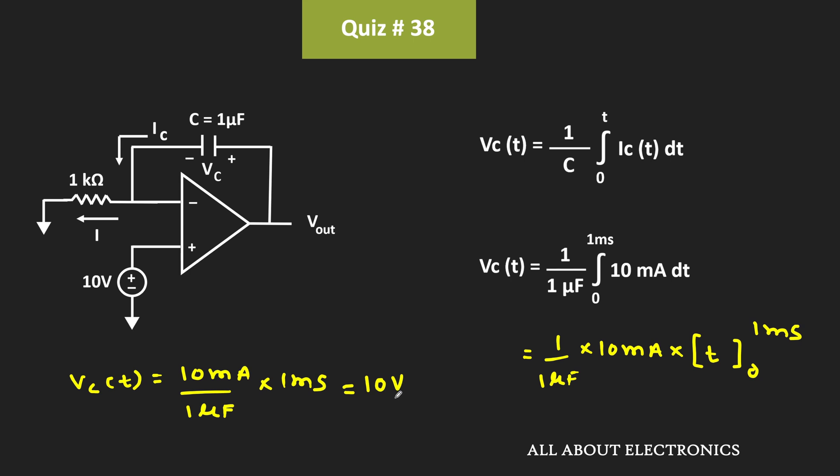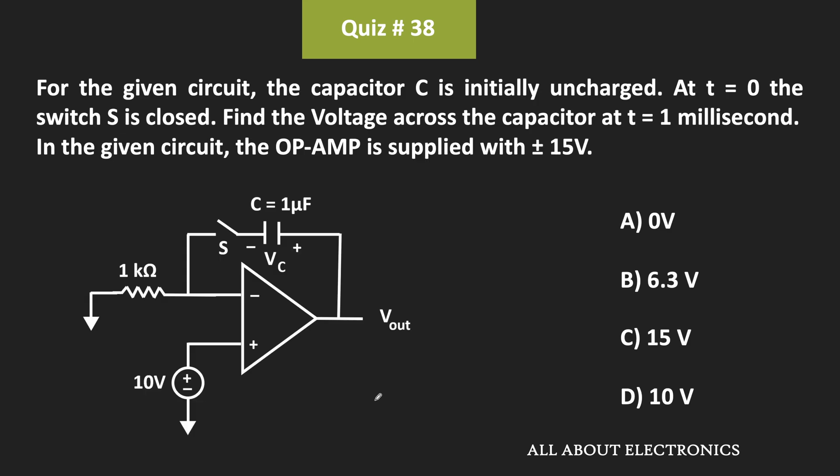Therefore, once the switch is closed, the voltage across the capacitor after 1ms equals 10V. For the given question, D is the correct answer.